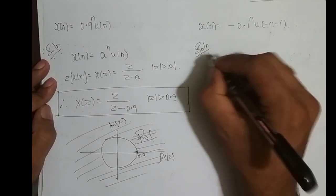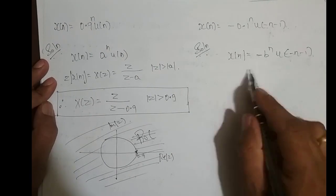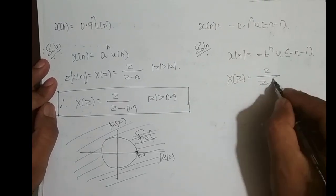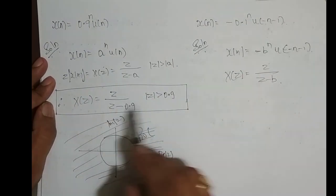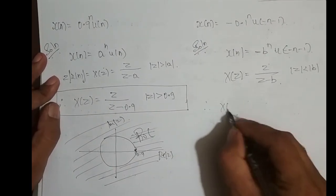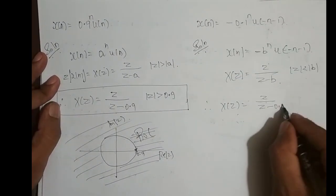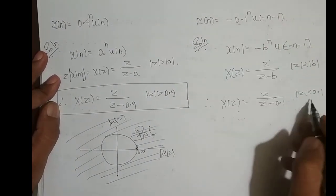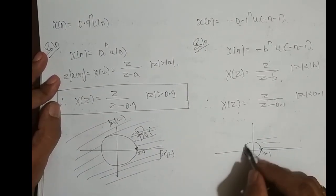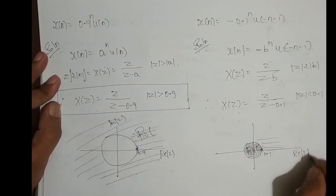The next sequence is of the form minus b^n u(minus n minus 1), which is an infinite length left-sided sequence. The Z-transform is Z divided by (Z minus b), same as the right-sided case — only the ROC changes. Here the ROC is magnitude of Z less than b, inside the circle. For b equal to 0.1, X(Z) = Z divided by (Z minus 0.1), ROC: magnitude of Z less than 0.1 — inside the circle of radius 0.1 in the Z-plane.